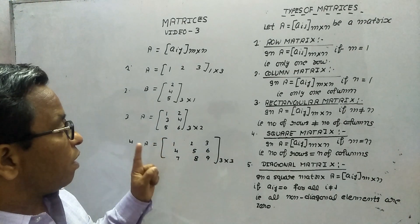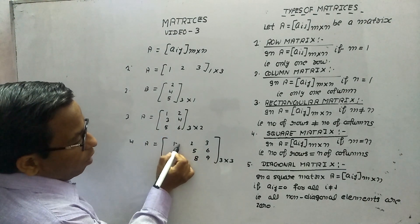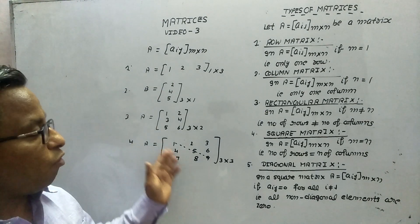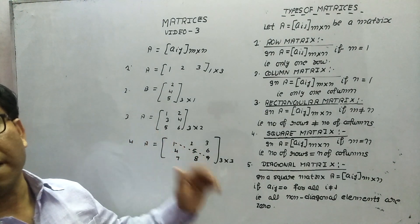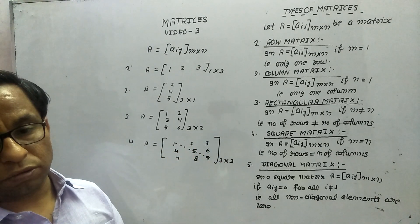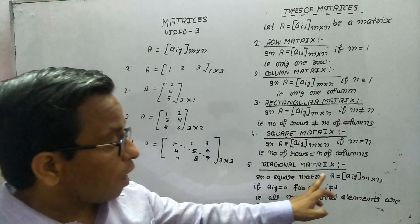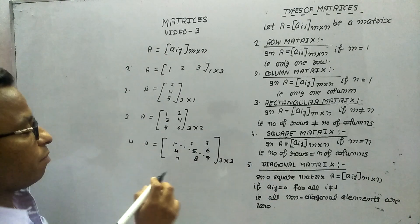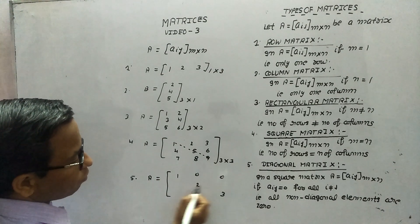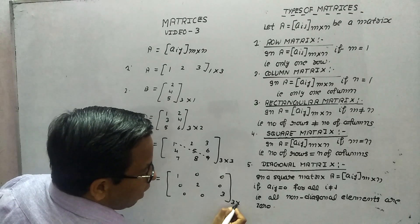In a square matrix, if we take the topmost element and the last element and draw a line, this is known as the diagonal of the square matrix. Elements falling on this line are the diagonal elements. In a diagonal matrix, these elements are never equal to 0; the rest are all 0. So for a square matrix Aij N by N, if Aij equals 0 for all i not equal to j, then it is a diagonal matrix.